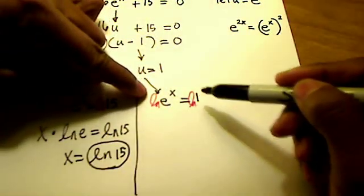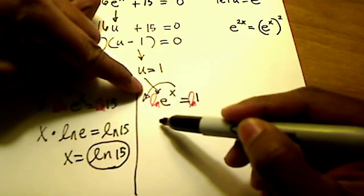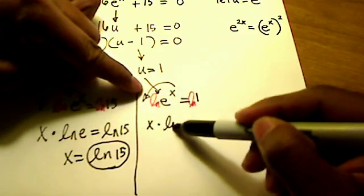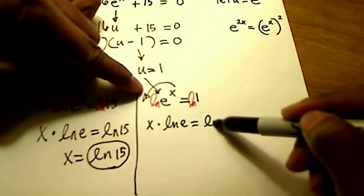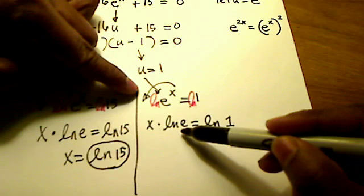On the right side I can do the same trick. I can take this x and kick it out front. So I have x times the natural log of e is equal to the natural log of 1. And I've got two things going on here. First, the natural log of e is simply a 1.